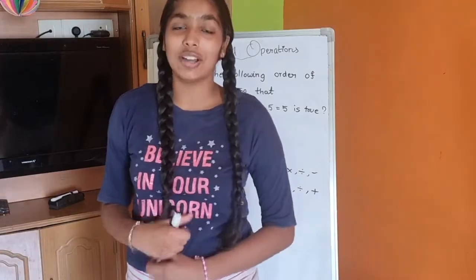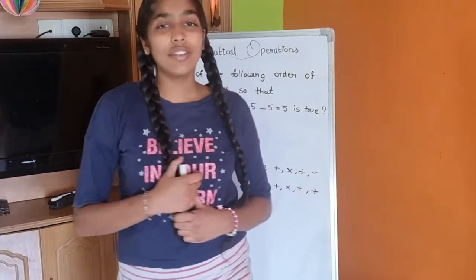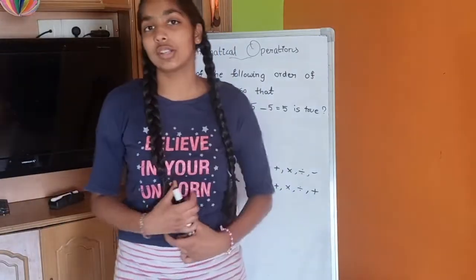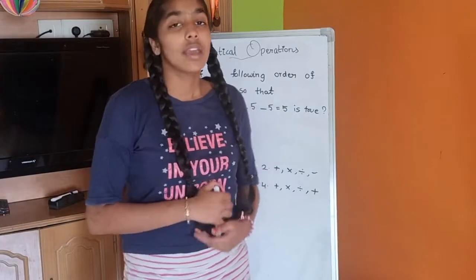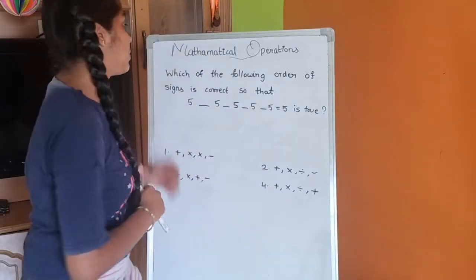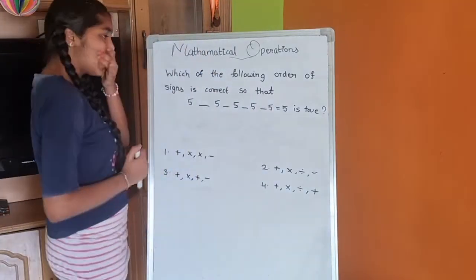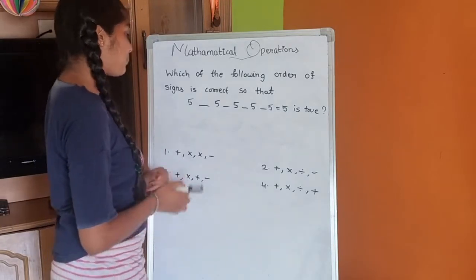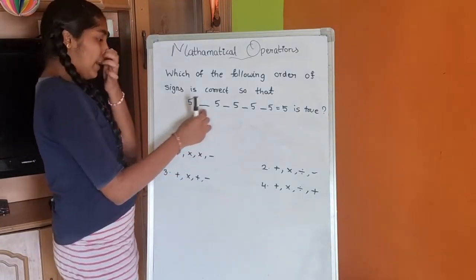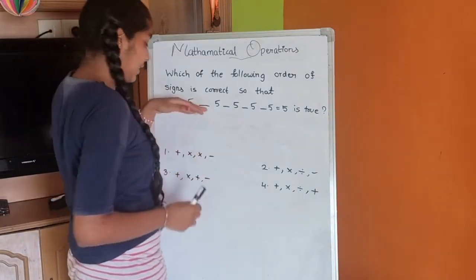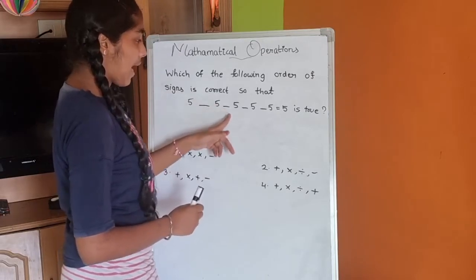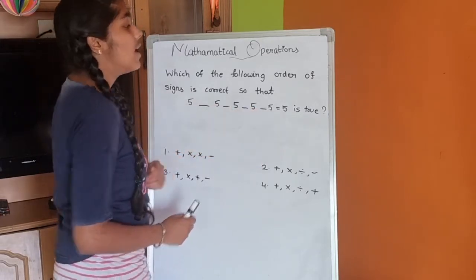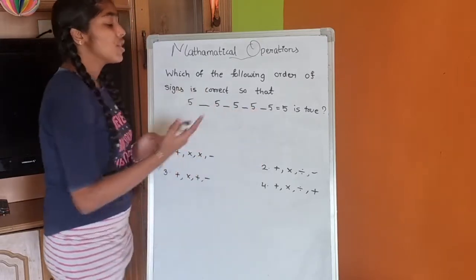Hello everyone, welcome to my channel. In today's video, let us continue with our concept of mathematical operations. The next question is: which of the following orders of signs is correct so that five blank five blank five blank five equals five is true?